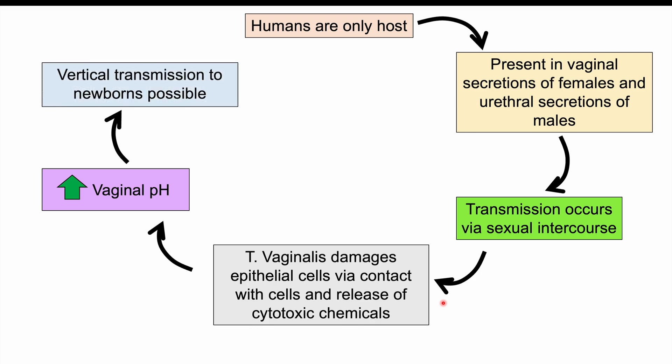Trichomoniasis can also be transmitted vertically — during delivery, a female can transmit this to their newborn baby. When an individual contracts this organism, it takes about 4 to 28 days on average for patients to start experiencing symptoms, so the incubation period is 4 to 28 days.